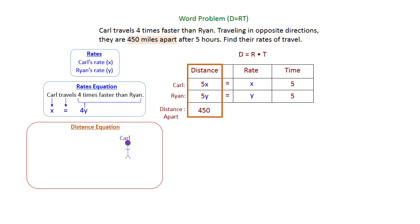Let's look at how that's going to work. We have Carl and Ryan traveling in opposite directions. Carl's traveling a whole lot faster than Ryan. We know Carl's distance from the table is 5X and Ryan's distance is 5Y. We also know they are 450 miles apart, so all you have to do is add together the 5X and the 5Y to get 450.